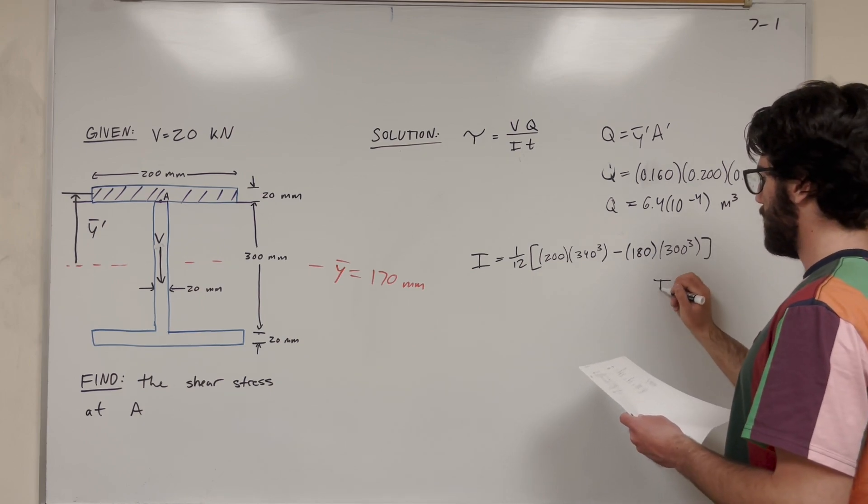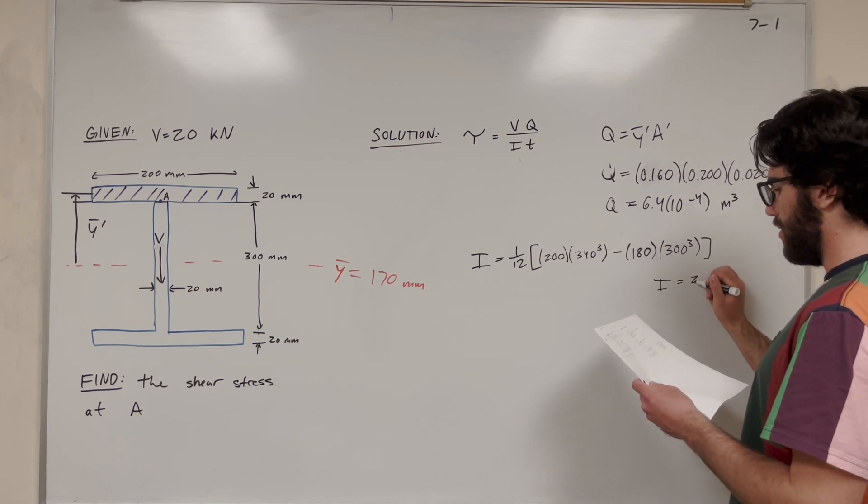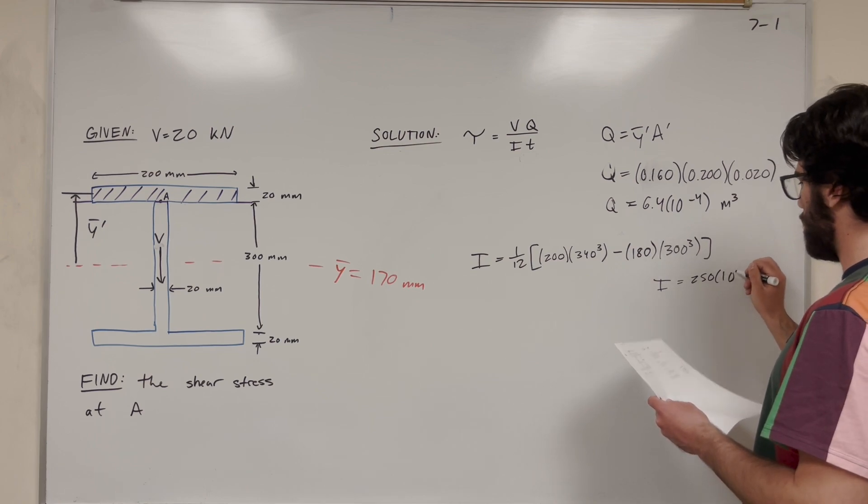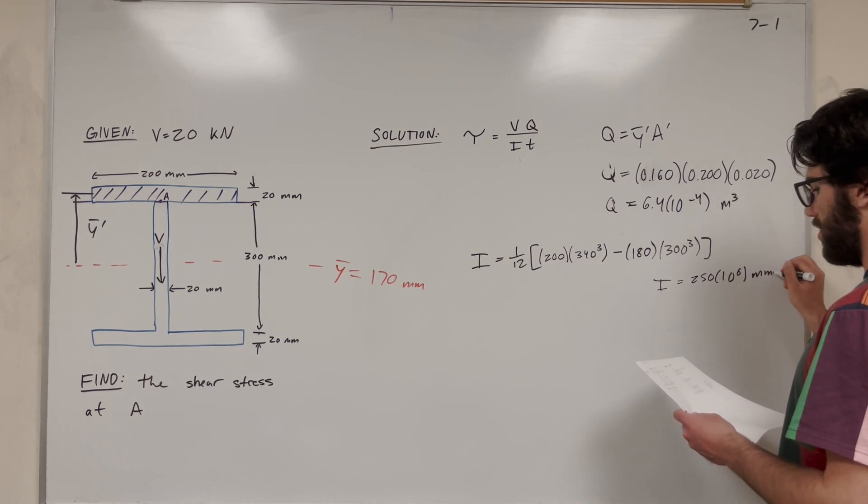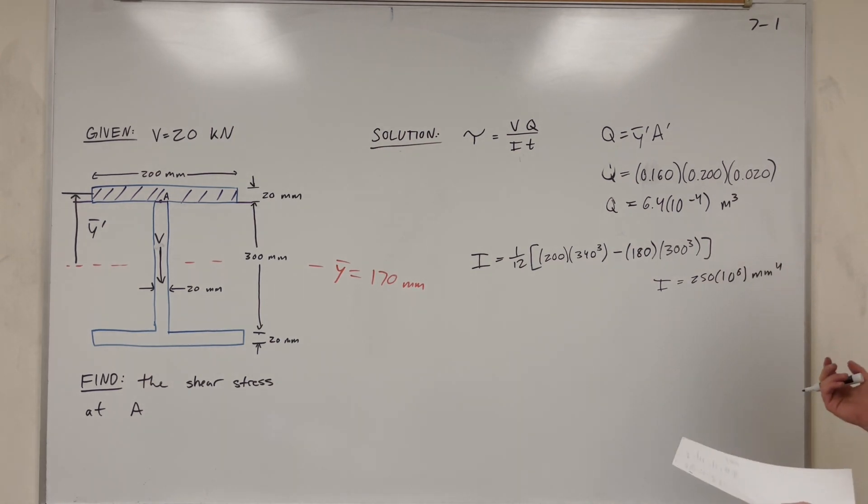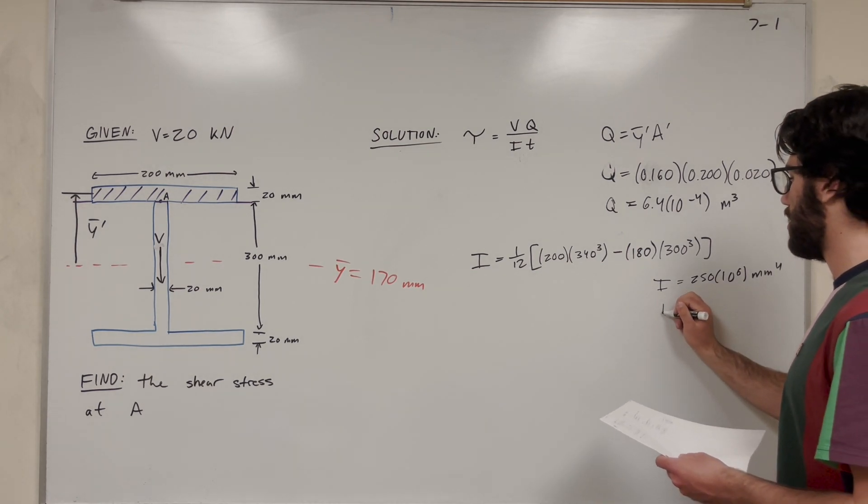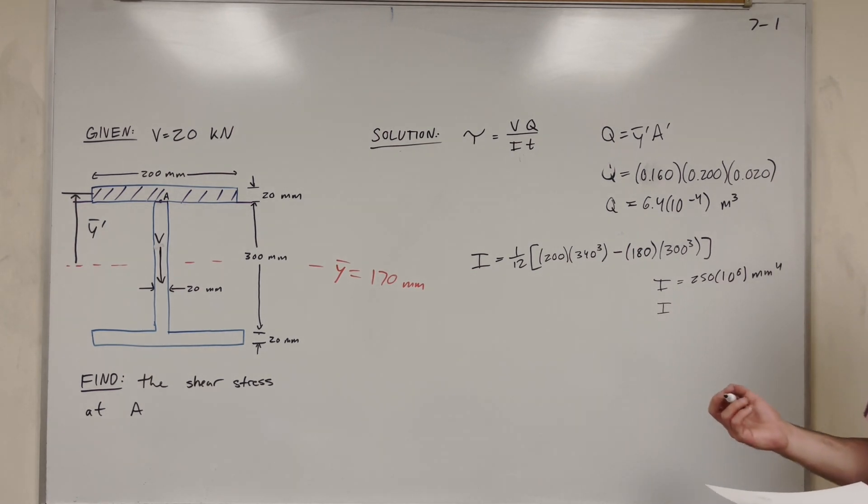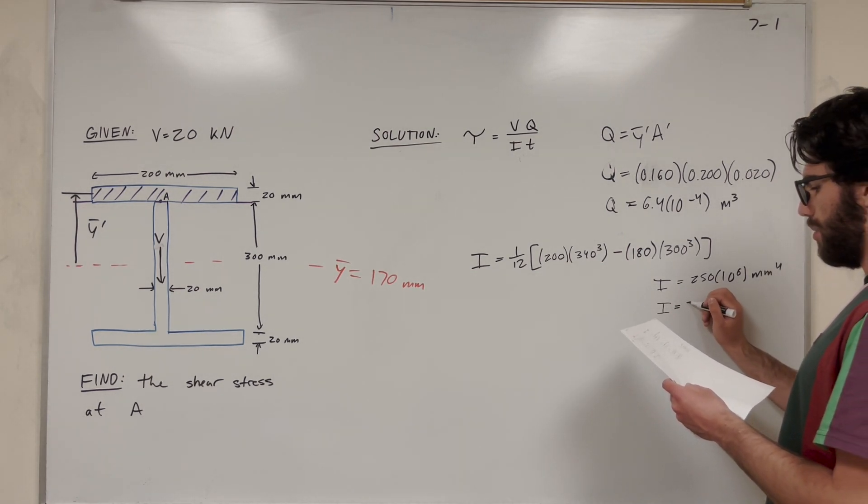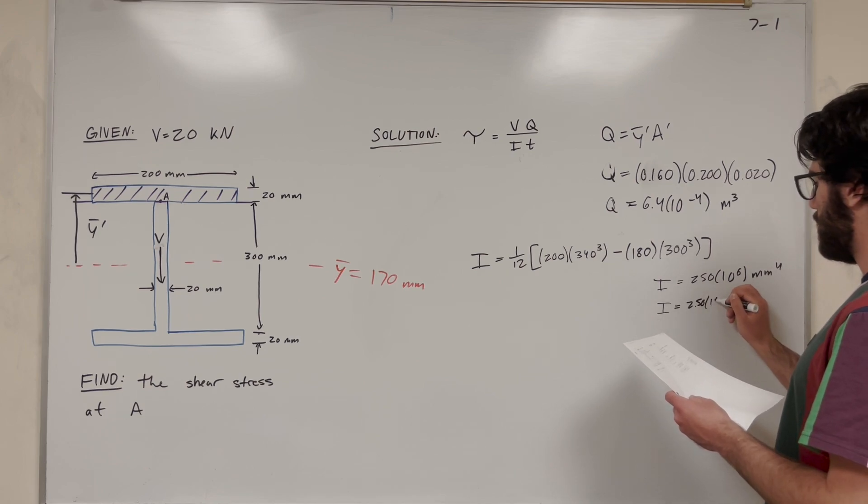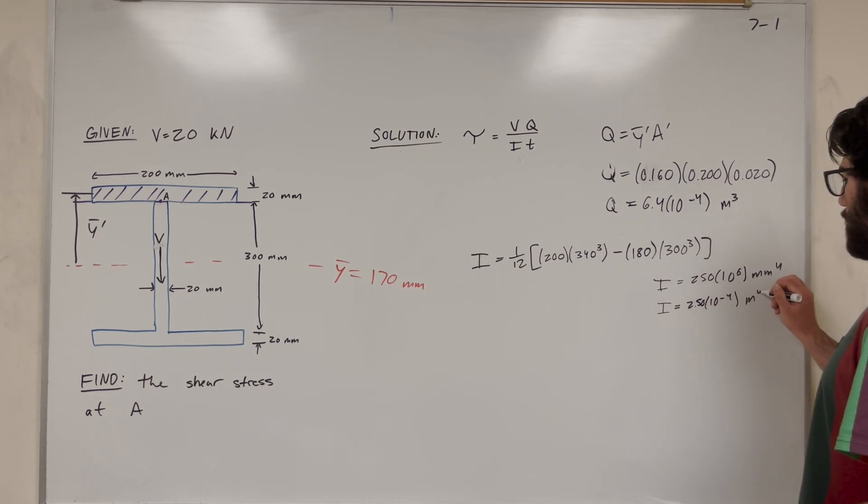So you do this and then I is equal to 250 times 10 to the 6 millimeters to the fourth. But we're going to want to convert to meters, so we're going to convert this by multiplying by 10 to the negative 12th. That's equal to 2.50 times 10 to the negative fourth meters to the fourth.